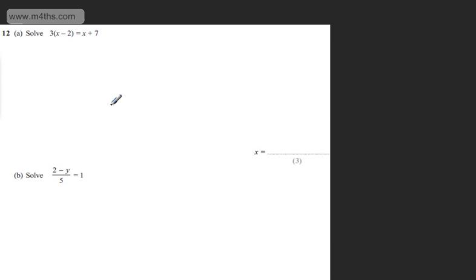This is question number 12. In part A for three marks, we're asked to solve 3(x-2) = x+7. So let's go ahead and write this out. So we have 3(x-2) = x+7.